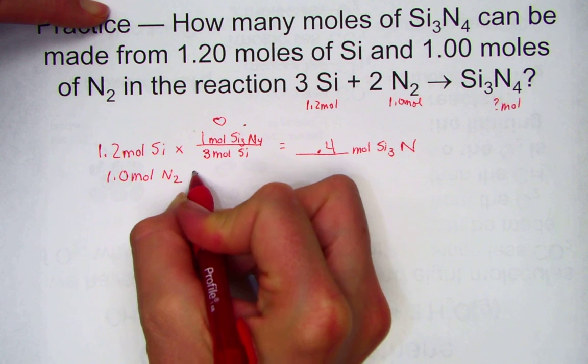We'll just set up a want over given ratio where we can target the moles of product, Si3N4. Its coefficient goes on top—it's what we want to calculate. One mole of Si3N4 is produced from every 3 moles of Si that we start with. The ratio of want over given is one-third.